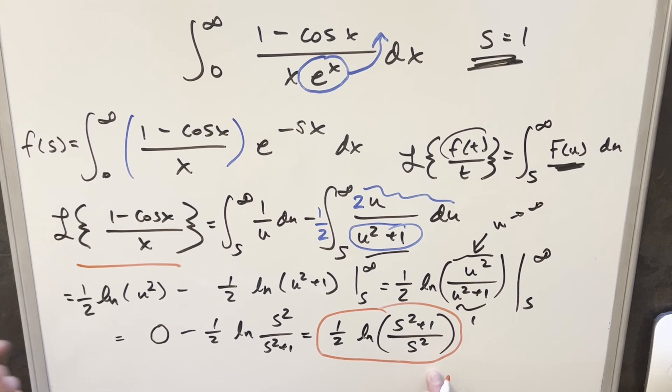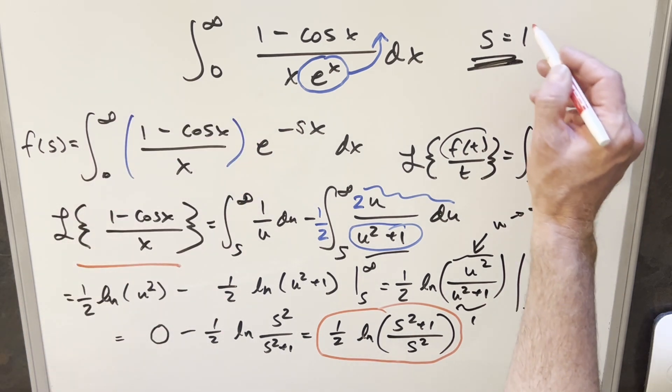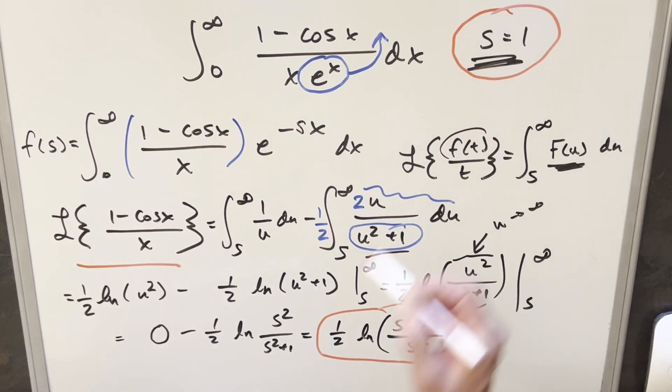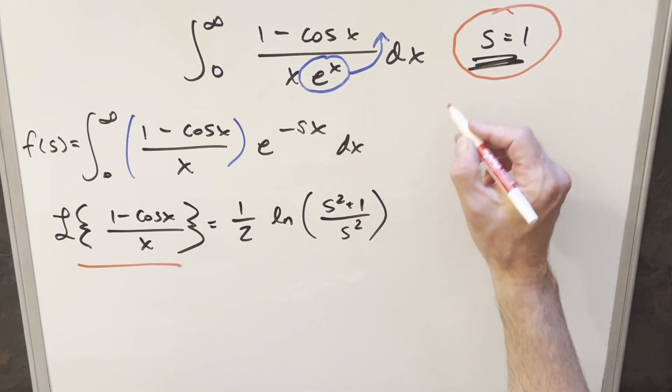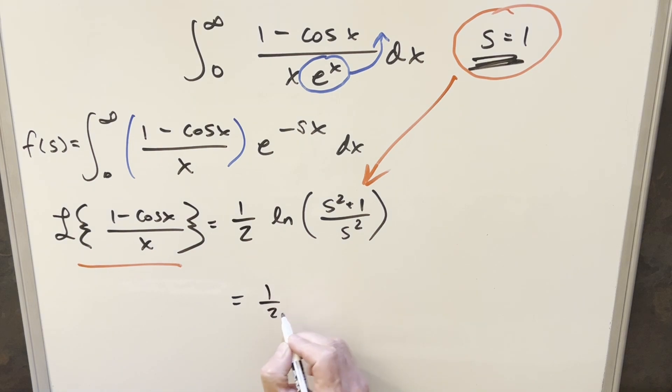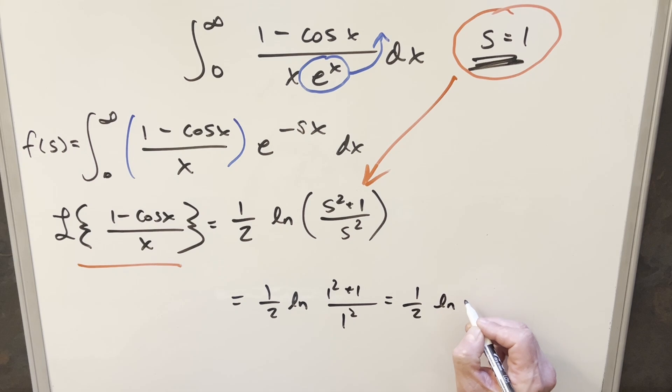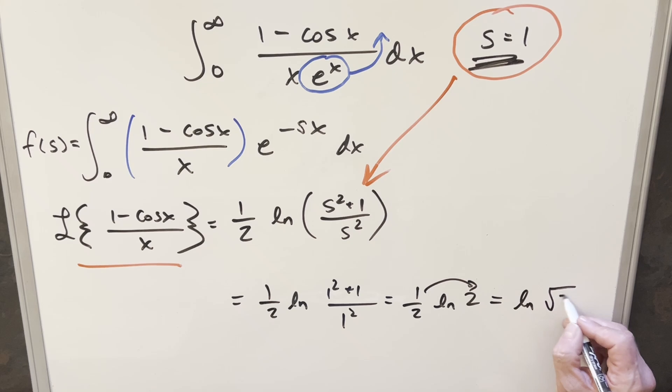All that's left to do is we don't really want this in terms of s. We've got a definite integral here. We just need to evaluate this at one. So going ahead, we'll just plug this in here with our s value. We're going to have our one half in front. Natural log s squared plus one. In the numerator, we have one squared plus one. And then the denominator, we just have one squared. Simplifying this, we have one half natural log of two. Bring the one half into the exponent. For my final solution we have natural log square root of two.